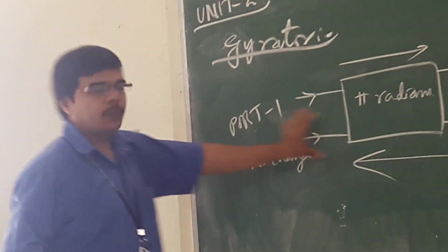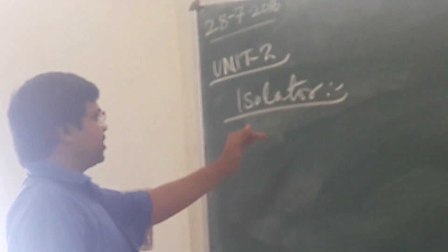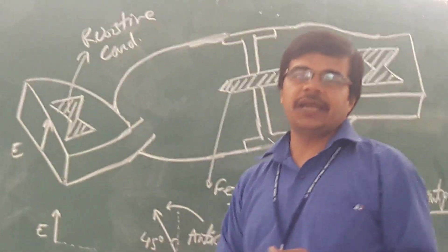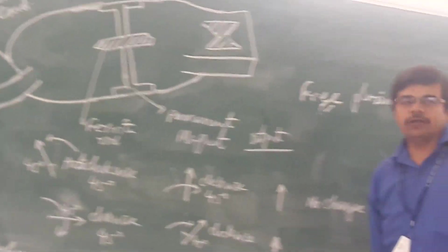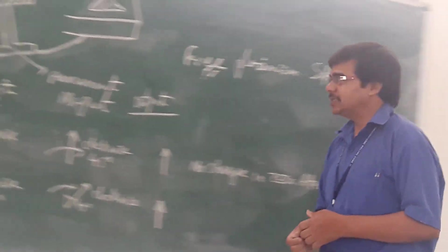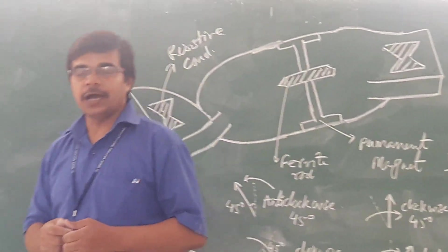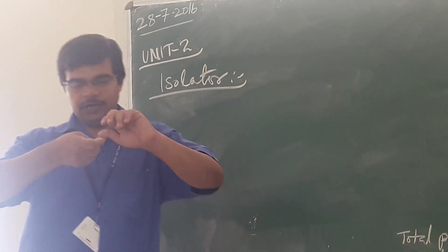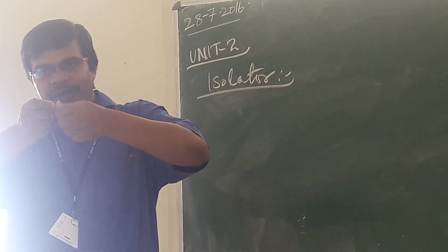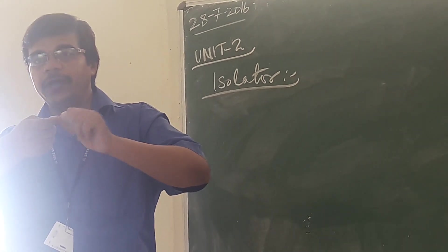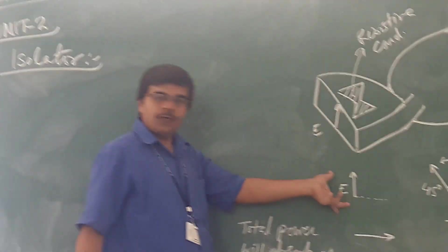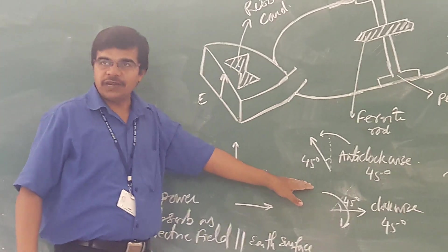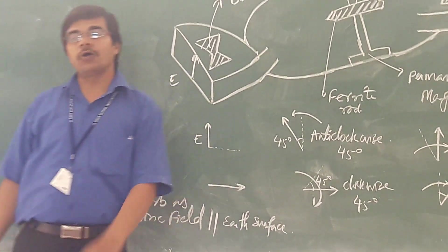The gyrator is a two-port device. Next is the isolator, which is also a microwave component similar to the gyrator. Here we use a resistive card, and the twist is in the reverse direction compared to the gyrator. In the isolator, the twist is made such that the electric field, after passing through the twist, makes a rotation of 45 degrees in the anti-clockwise direction.